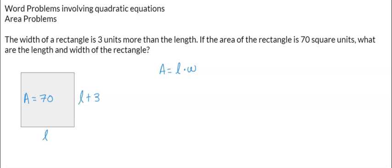To do this, we know that the area is equal to length times width. So we're going to substitute each of them. This is the width and that's the length. So area is 70 square units equals the length, which is L, times the width, which is L plus 3.